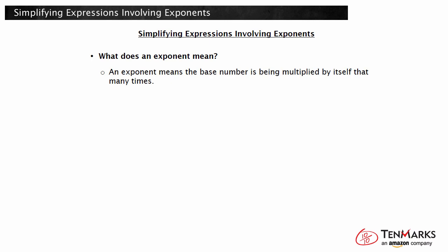An exponent means that the base number is being multiplied by itself as many times as is given by the exponent. For example, 4 to the sixth power means the base 4 is multiplied by itself 6 times. So, 4 to the sixth equals 4 times 4 times 4 times 4 times 4 times 4, which is 4096.